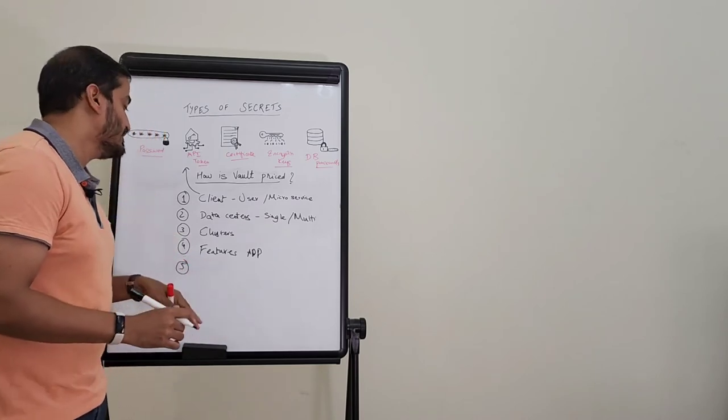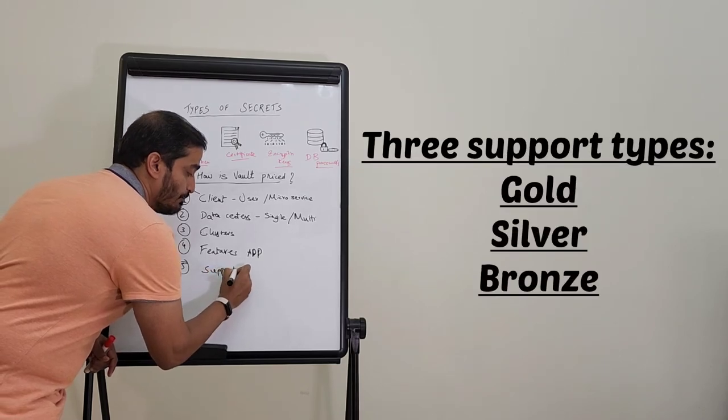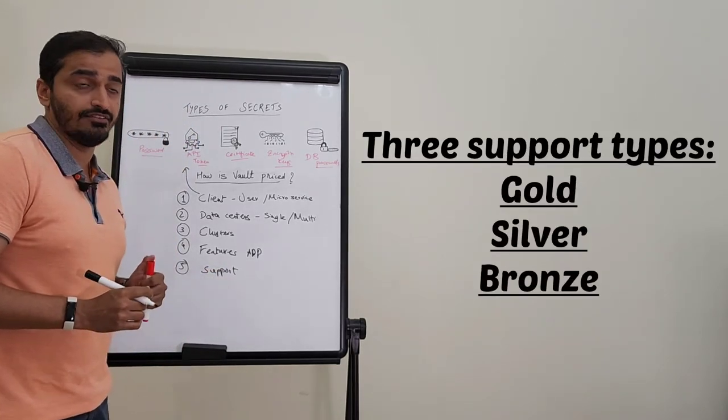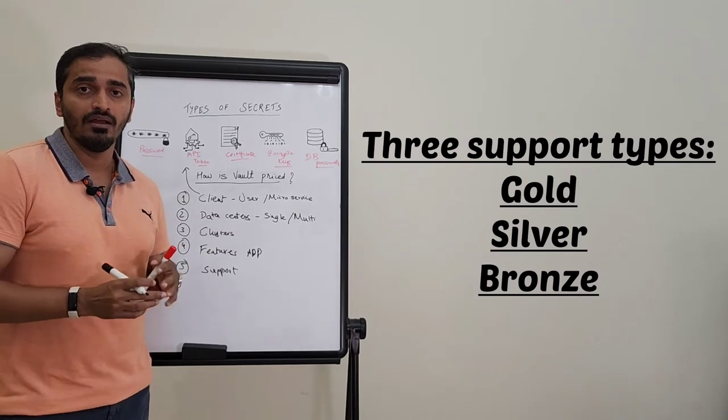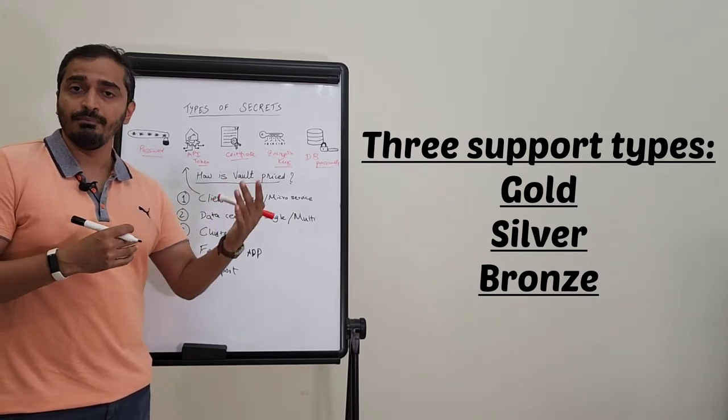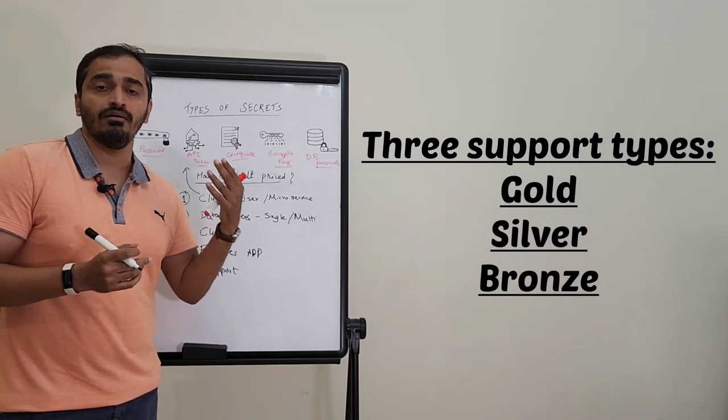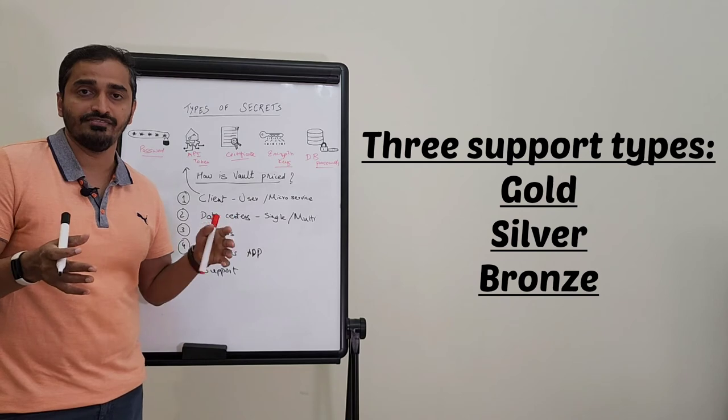And last but not the least is essentially the type of support you require for Vault. So this comes directly from HashiCorp. There are three main types of support levels: gold, silver, and bronze, depending on whether you want 24/7 access or you want nine by five Monday to Friday kind of access.